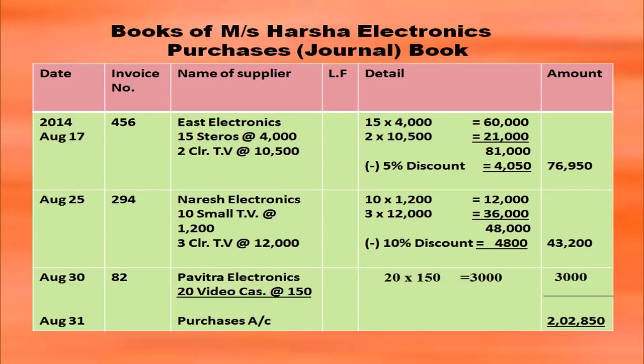August 30th, from Pavitra Electronics, Harsha Electronics purchased 20 video cassettes at rupees 150. 20 × 150 = 3,000 as the net amount in the amount column. When you add all the purchases including the previous transactions, you will get a total of 2,02,850. That amount is written in the amount column after totaling. In the same line in the name of the supplier column you write 'purchases account', and in the date column you put the last date of that particular month, that is August 31st.